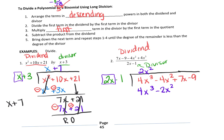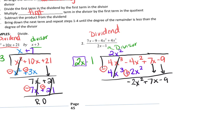I change the signs: that becomes a minus, this becomes a plus. The 4x cubed terms cancel. Negative 4x squared plus 2x squared is negative 2x squared. I bring down the 7x. Now, what do I multiply 2x by to make it negative 2x squared? It needs to be negative x, because negative x times 2x is negative 2x squared. And negative x times negative 1 is positive x.